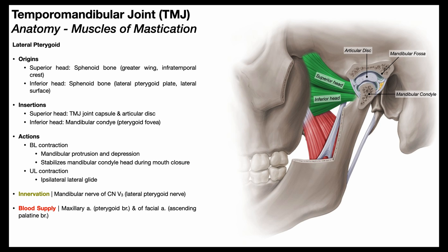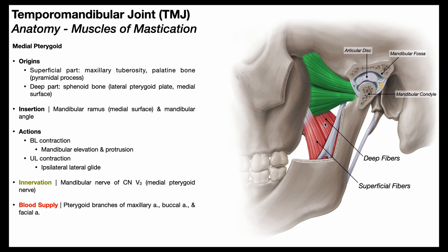Finally, the medial pterygoid muscles are divided into deep and superficial fibers, similar to the masseter. The superficial fibers originate from the maxillary tuberosity and the pyramidal process of the palatine bone. The deep fibers originate from the medial surface of the lateral pterygoid plate of the sphenoid bone. Both sets of fibers run inferiorly and insert on the medial surface of the mandibular ramus and the mandibular angle.